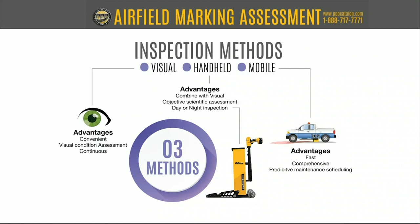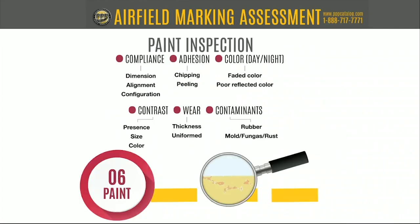No matter what type of inspection you do, at some point there needs to be a visual inspection, because a lot of times what the machines do is identify that something's wrong — and when you do the visual inspection, you'll be able to see what that something really is: the cause, not just the effect. Let's move on to paint inspection.